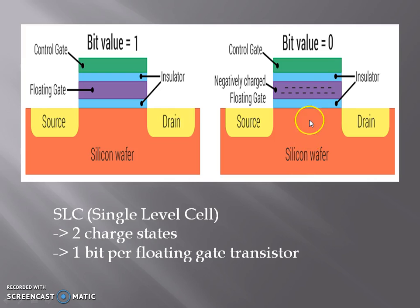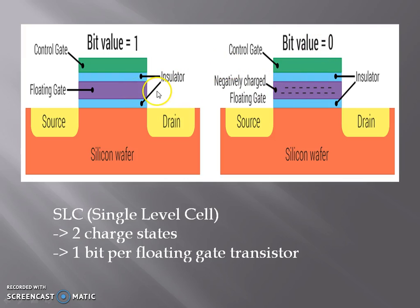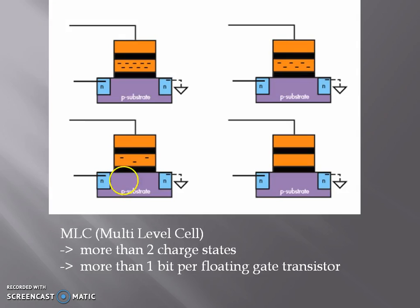There can be different approaches for bit value encoding. One such approach is having two charge states: one which has a negative charge and one which has no charge. The one with a negative charge has a bit value 0 and the one with no charge has a bit value 1. This is known as a single level cell or SLC. We can also have MLC, that is multi-level cell, in which there are more than two charge states and more than one bit per floating gate transistor are encoded.